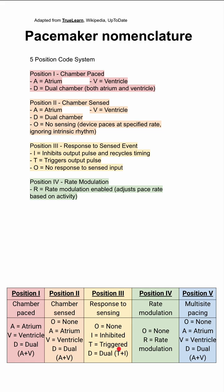The fourth position is rate modulation. An R here would be rate modulation enabled, which means that the device adjusts its pace rate based on the heart's activity. And an O would be a disabling or unavailable rate modulation. This is often omitted if it's absent.